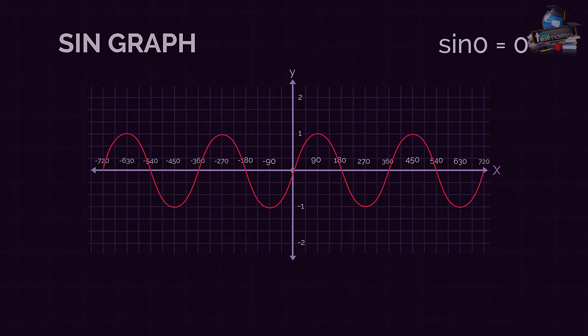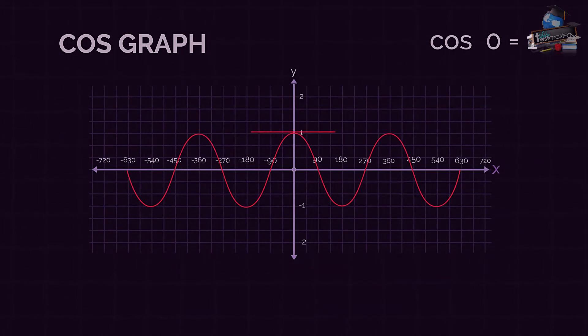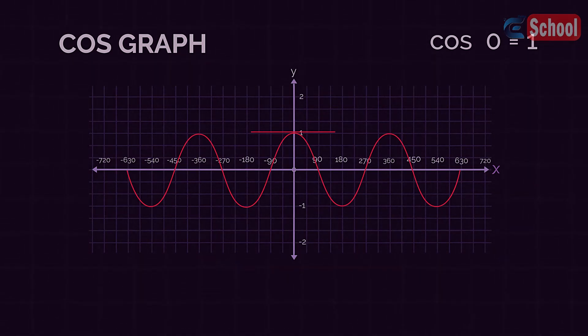If you type sine 0 into your calculator it comes up as 0, which should help you remember the sine curve crosses through the origin. And sine 90 equals 1, so the curve is at 1 here. Type cos 0 into your calculator and you get 1.